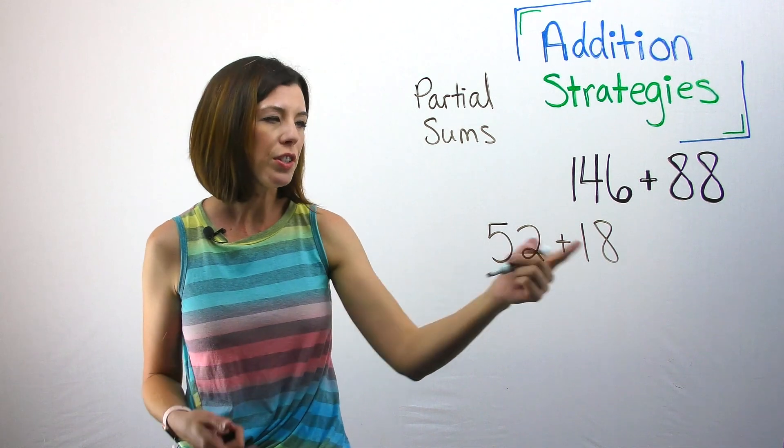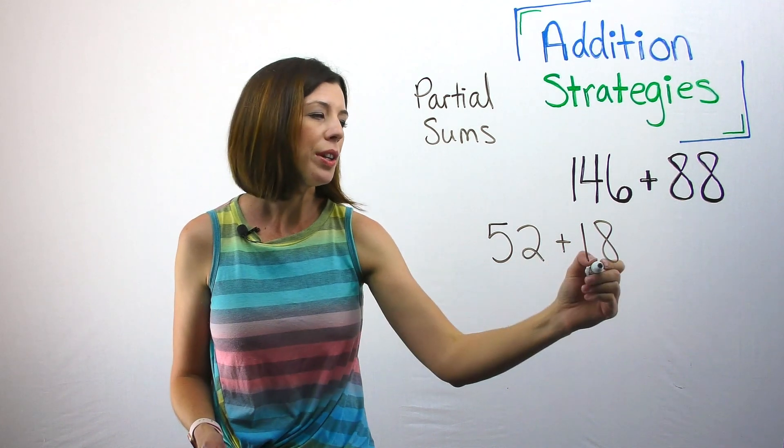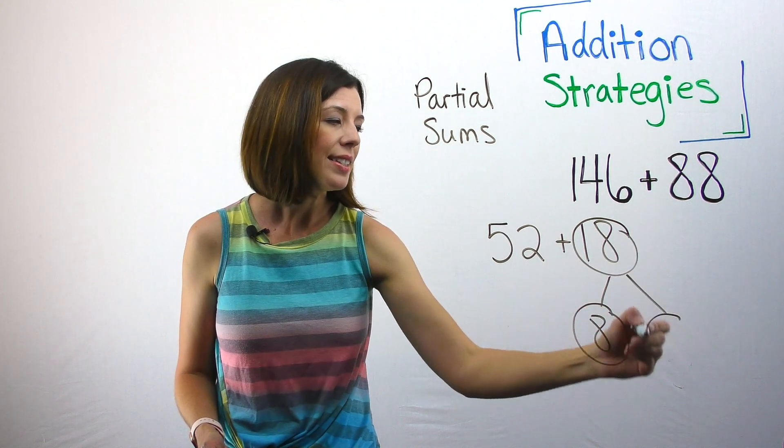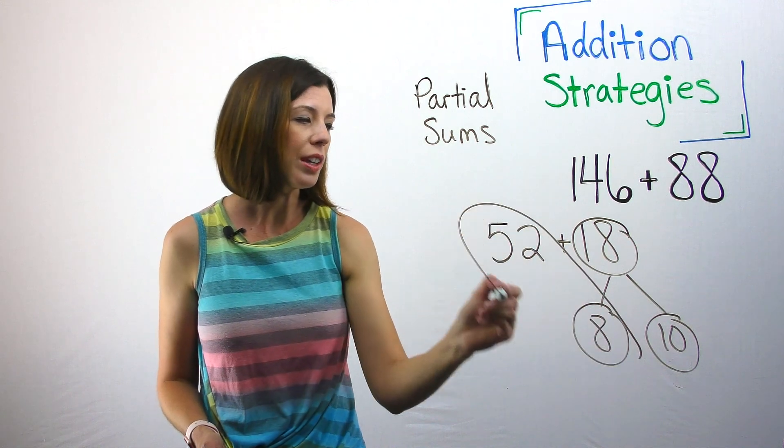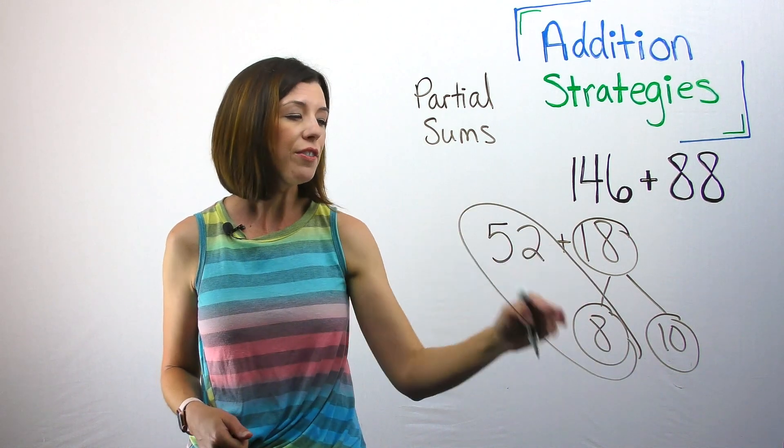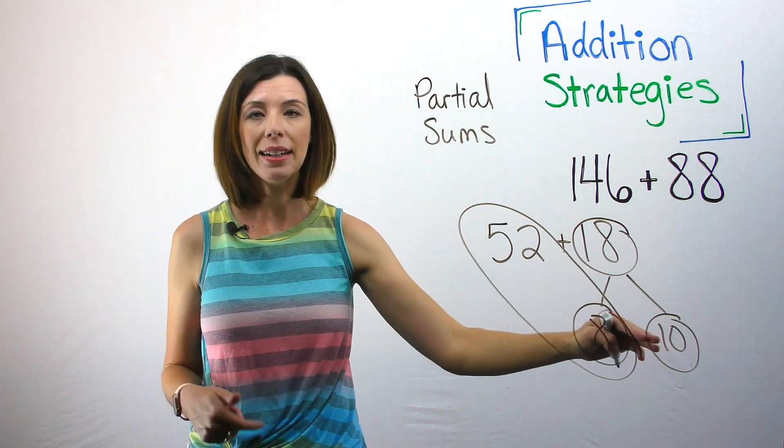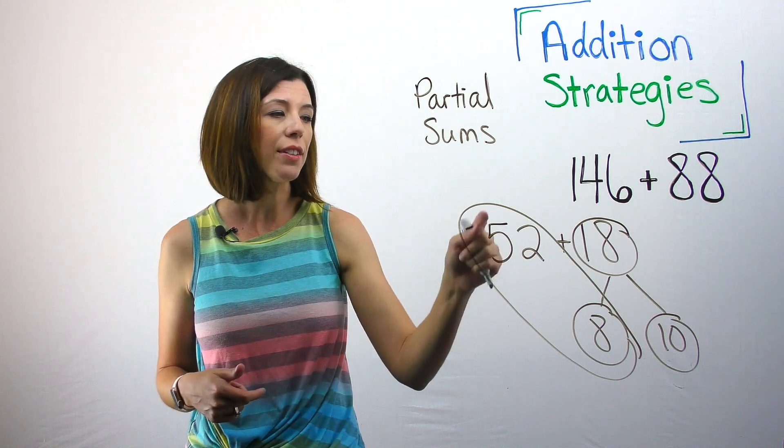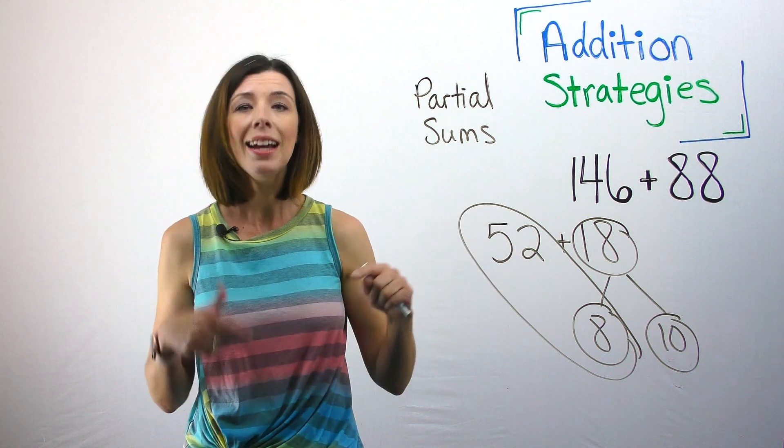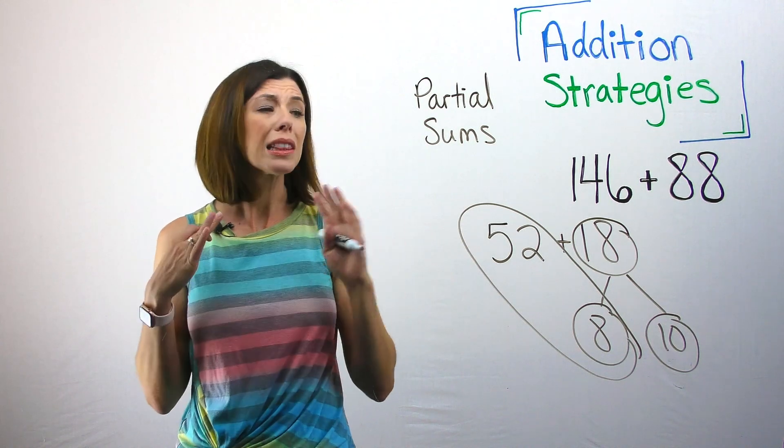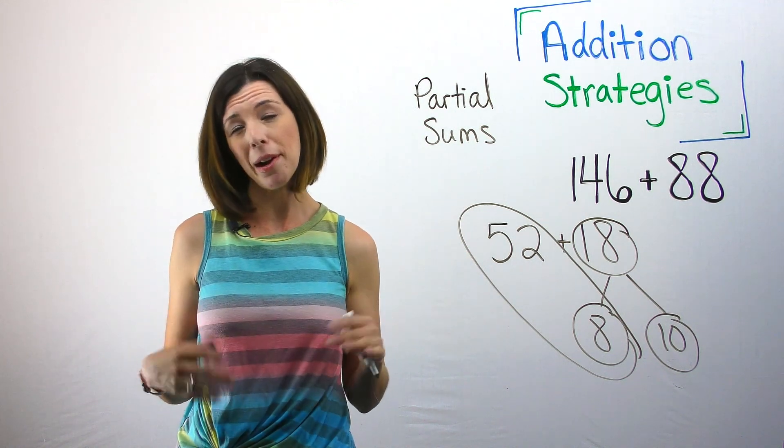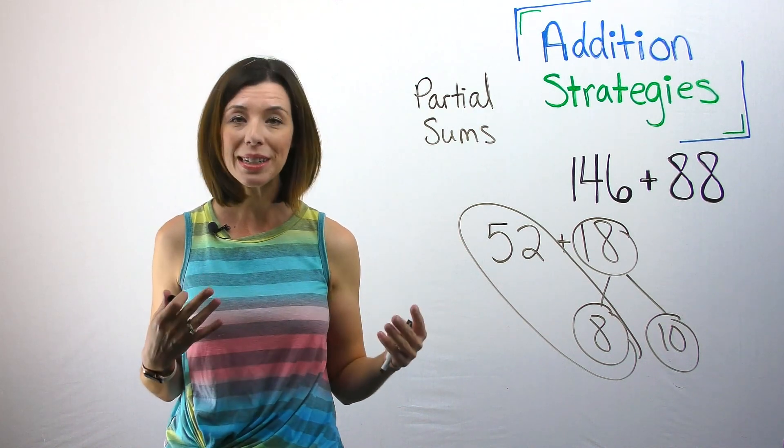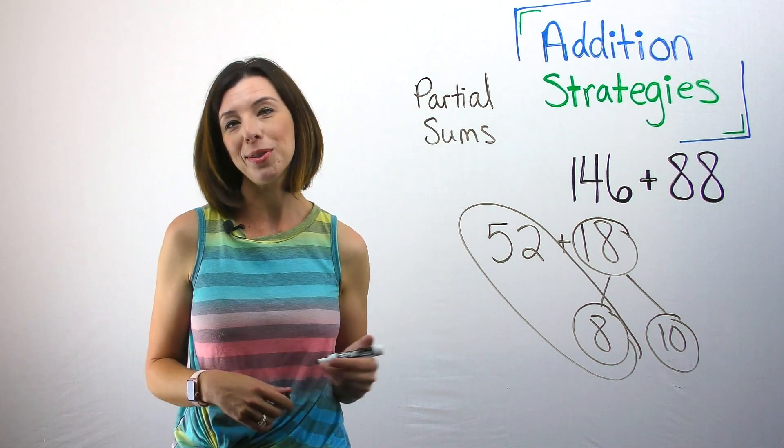When I think about the expression 52 plus 18, some students are going to want to break this 18 apart into eight and 10. And when they do that, they can actually, again, make a 10 strategy, know that 52 plus eight is 60, 60 plus 10 gives them 70. So this is going to be a lot easier for some students than saying 50 plus 10 is 60, two plus eight is 10, 60 plus 10 is 70. Again, lots of different ways that you can break numbers apart. Nothing is really right or wrong. It's really interesting to hear students thinking and reasoning as they explain why they chose the numbers that they did.